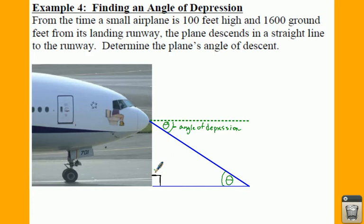So what we have is we have an airplane that's 100 feet high in the air. So this would be your 100, your Y height, your vertical height. And it's 1,600 ground feet away from the landing runway. Here's your 1,600. We need to find out where theta is.